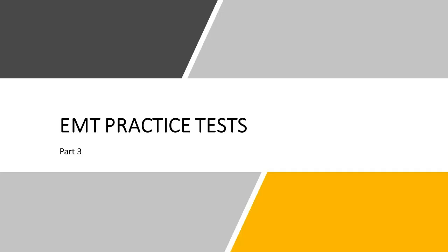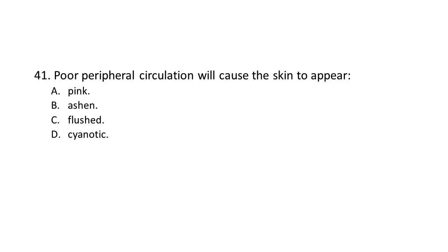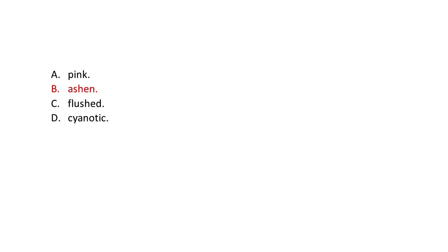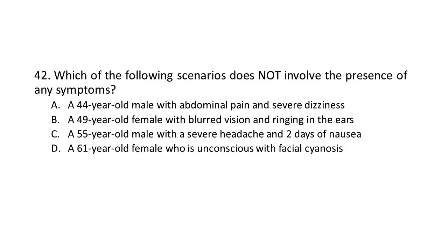EMT Practice Tests Part 3, Question 41. Poor peripheral circulation will cause the skin to appear: Pink, Ashen, Flushed, or Cyanotic. The answer is B: Ashen.